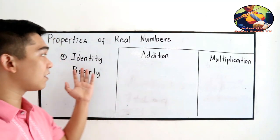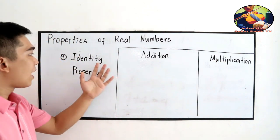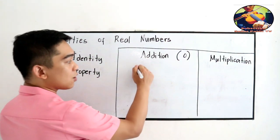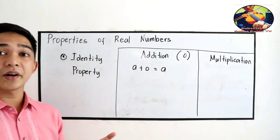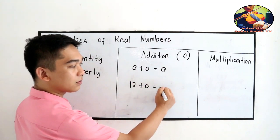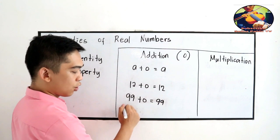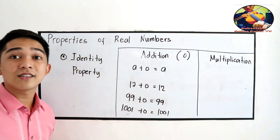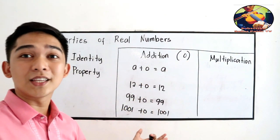The next property is the identity property of addition and identity property of multiplication. The identity element for addition is 0. So A plus 0 equals A — any number added to 0 equals that same number. For example: 12 plus 0 is 12, 99 plus 0 is 99, and 1,001 plus 0 is 1,001. When you add 0 to any number, the sum is still that number.